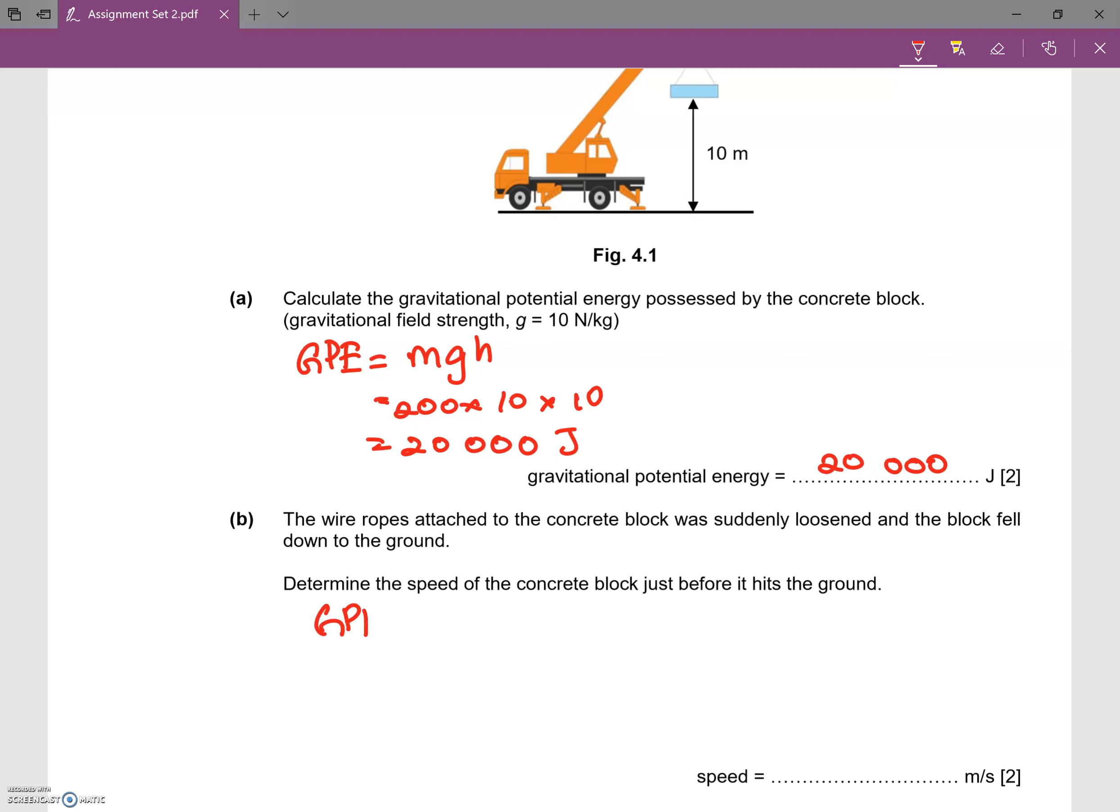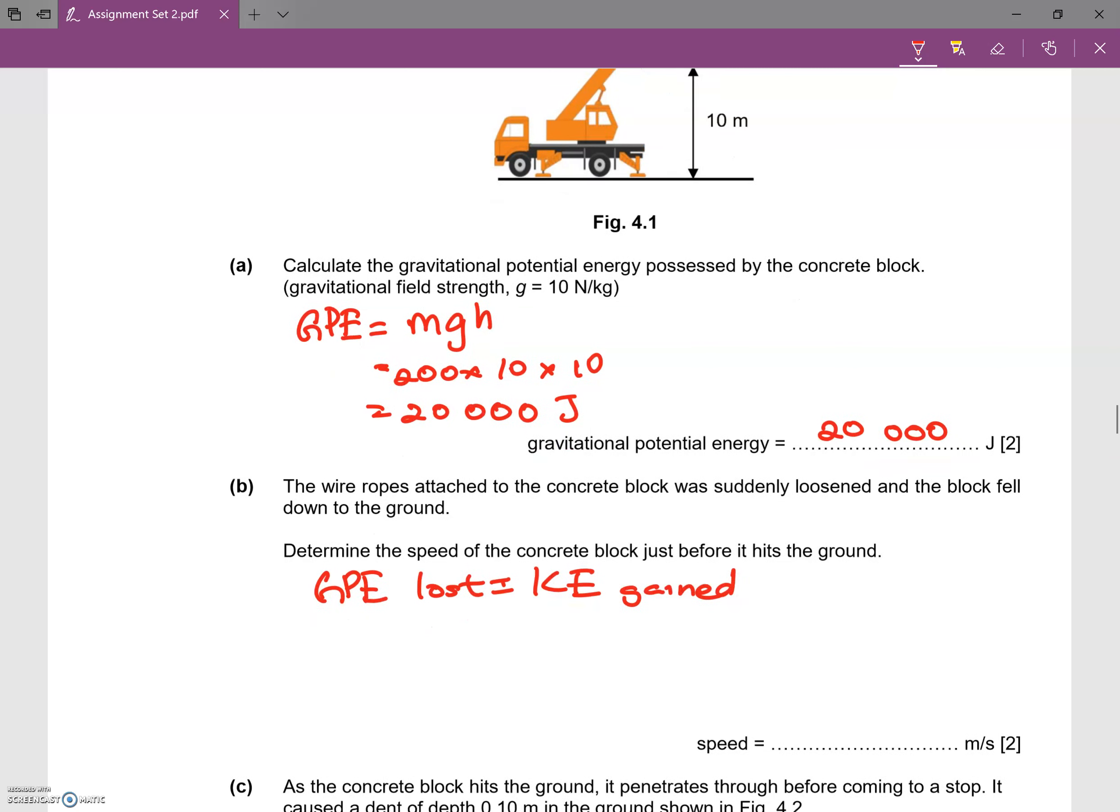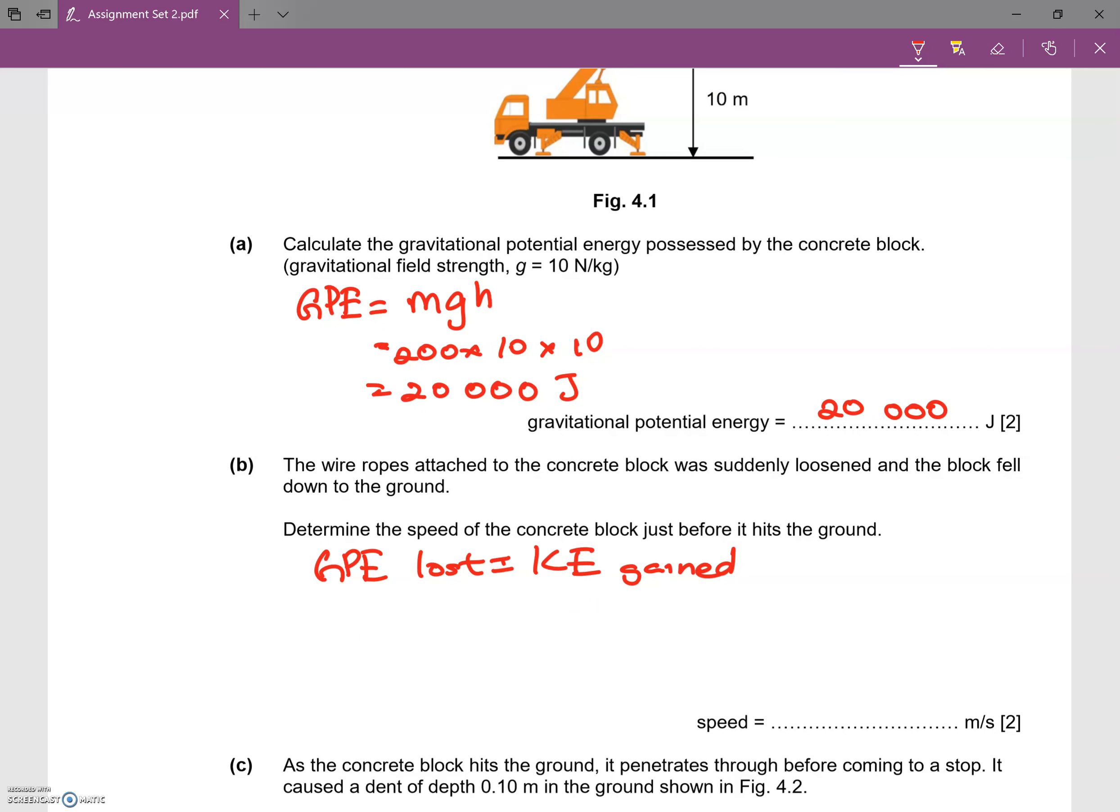So to determine the speed, we know that the GPE loss must equal the KE gain. We just equate the two formulas here, and because it's all the way to the bottom, the GPE loss equals 20,000. So 20,000 is the GPE loss, which equals half mv squared.